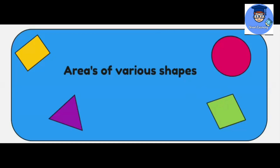So basically, what is area? Area is something that occupies space. For example, we have a triangle here. The space occupied by this triangle is known as the area.